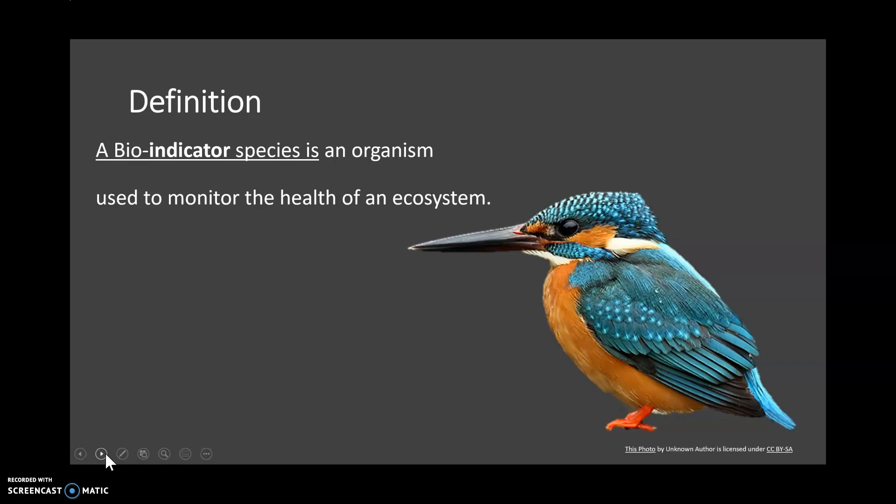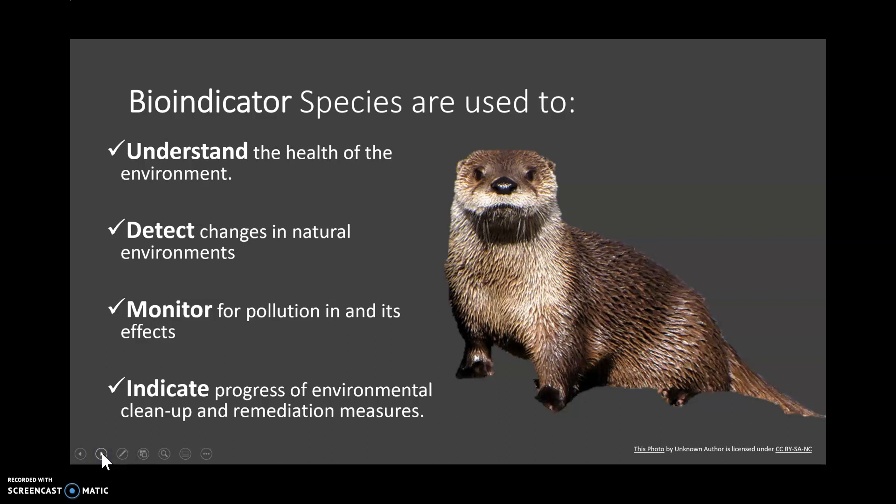Some indicator species are aquatic and some are terrestrial. Bio-indicator species are used to understand the health of an environment — that's fairly obvious. Often the greater the diversity of species you have in a habitat or ecosystem, the better the health of that environment.